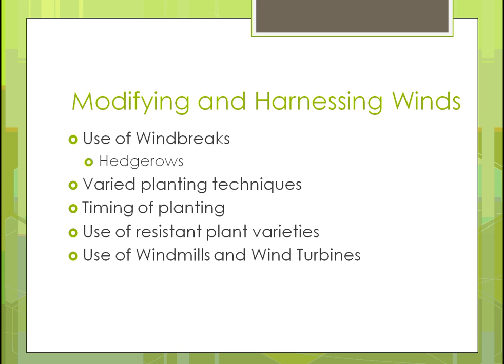We can use varied planting techniques — planting more than one crop or arranging plants so that if wind comes from a certain direction, they aren't affected as much. We can change the timing of planting, since there may be periods of the season that are more windy. Genetically, new varieties of wind-resistant plants are being developed. And of course, to help modify the wind, we can use windmills or wind turbines, which won't eliminate all the wind but put it to very good use.